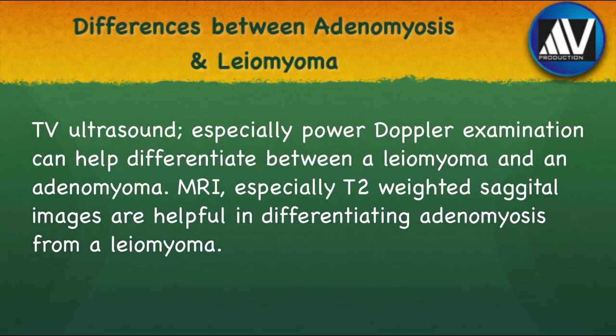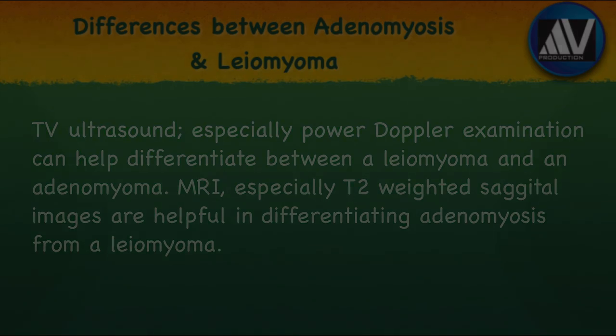Transvaginal ultrasound, especially a power Doppler examination, can help differentiate between a leiomyoma and an adenomyoma. MRI, especially T2-weighted sagittal images, is helpful in differentiating adenomyosis from a leiomyoma.